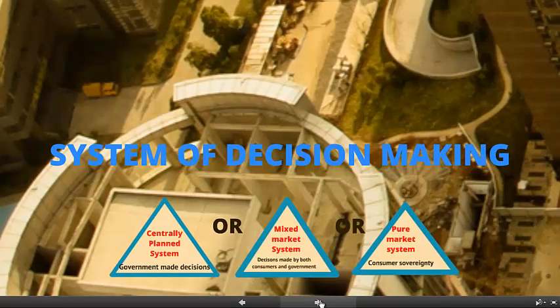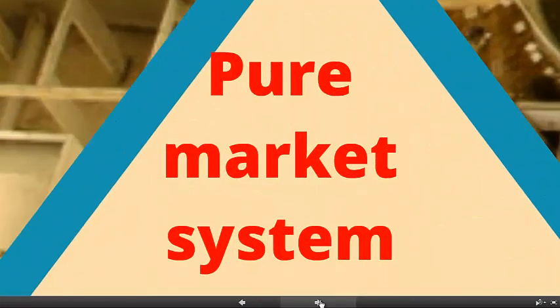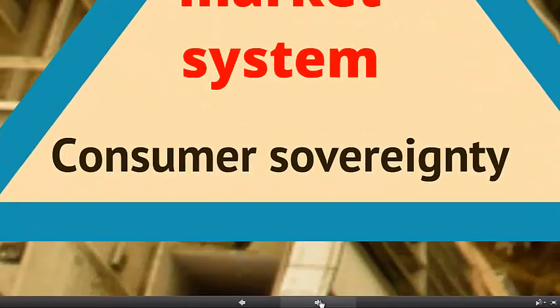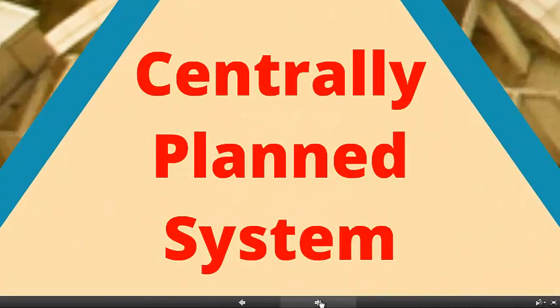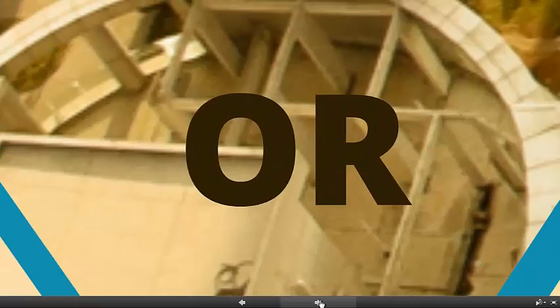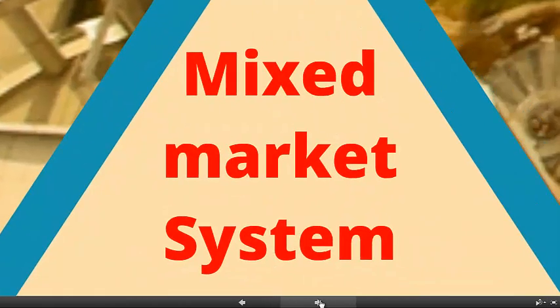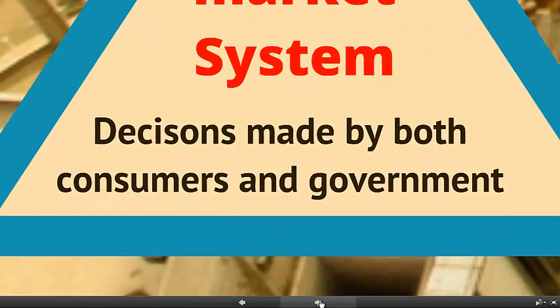There are three options for countries making economic decisions. Firstly, the pure market or capitalist system, where the free market or price system allows individuals to make choices. This is called consumer sovereignty, where buyers decide what products and services they want — if they don't want certain goods, less will be sold and therefore less produced by businesses. Resources go into making things that people can afford to buy, not based on need. Or at the other extreme, the centrally planned system, where the government makes all the decisions about how much and for whom goods and services are produced. Lastly, we have the mixed market model, a mixture of both extremes where decisions are made by both consumers and government intervention.